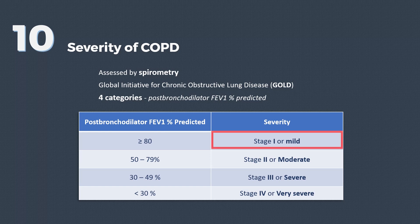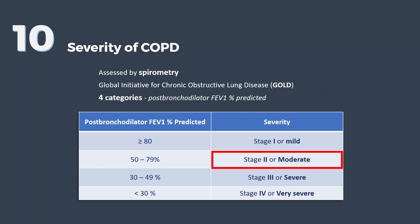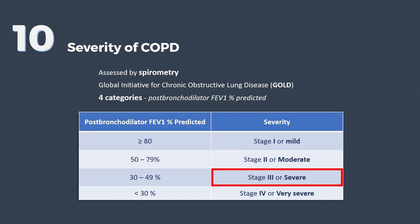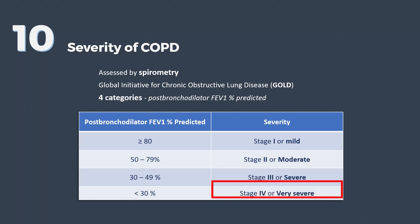Stage 1 or mild disease is when FEV1 is greater than 80% predicted. Disease is stage 2 or moderate if FEV1 is 50–79%. It is stage 3 or severe if FEV1 is 30–49%. And it is very severe disease or stage 4 when FEV1 is less than 30%.